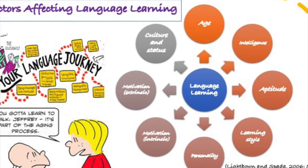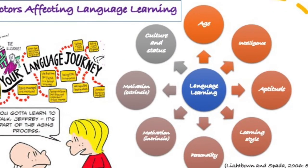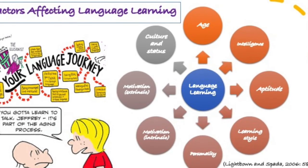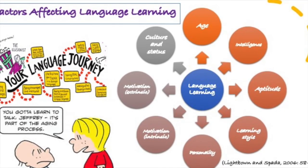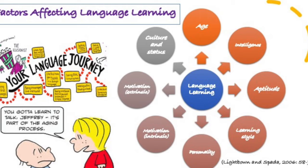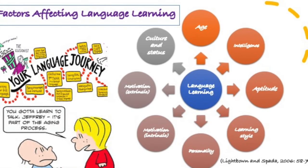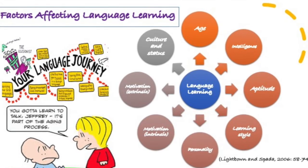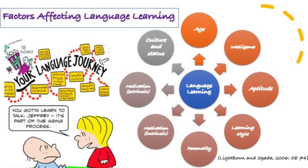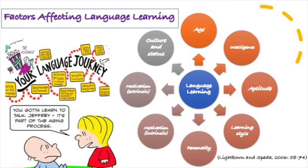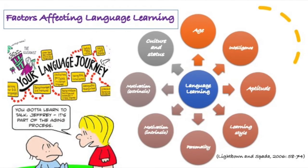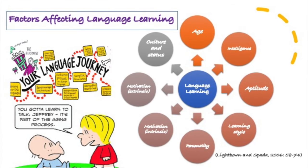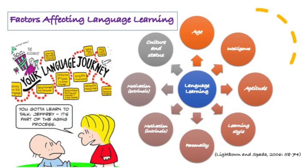Some students learn a new language more quickly and easily than others. This fact is related to crucial factors influencing success that are largely beyond the control of the learner. Lightbone and Spada identified some factors that affect language learning, which are intelligence, aptitude, learning style, personality, intrinsic motivation, extrinsic motivation, culture and status, and age.